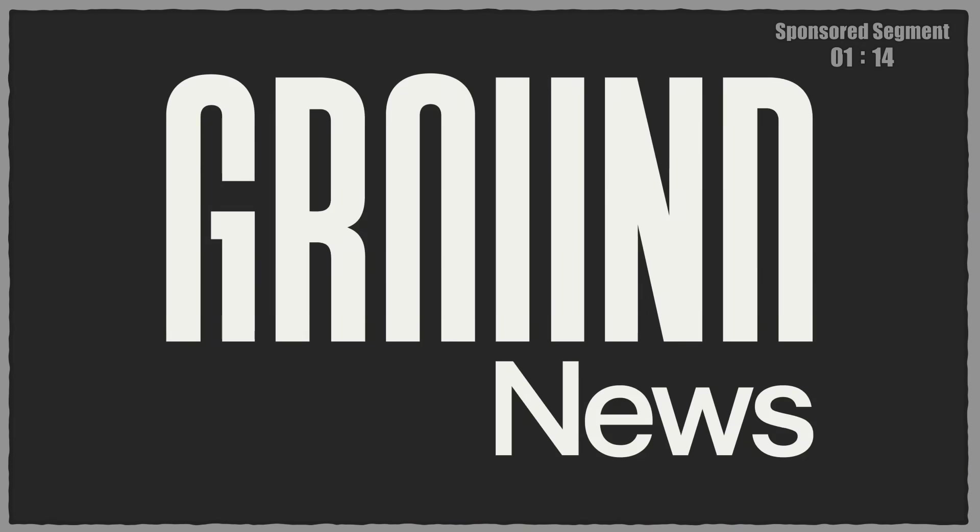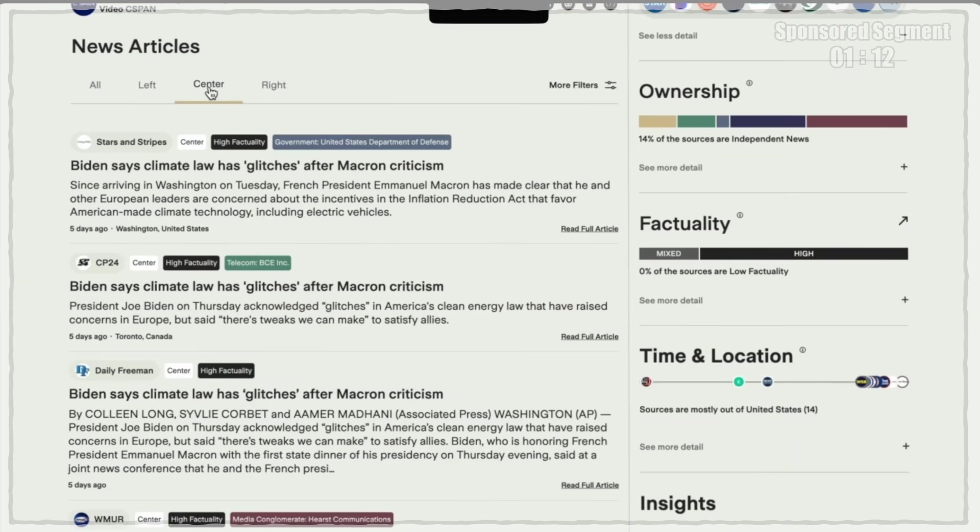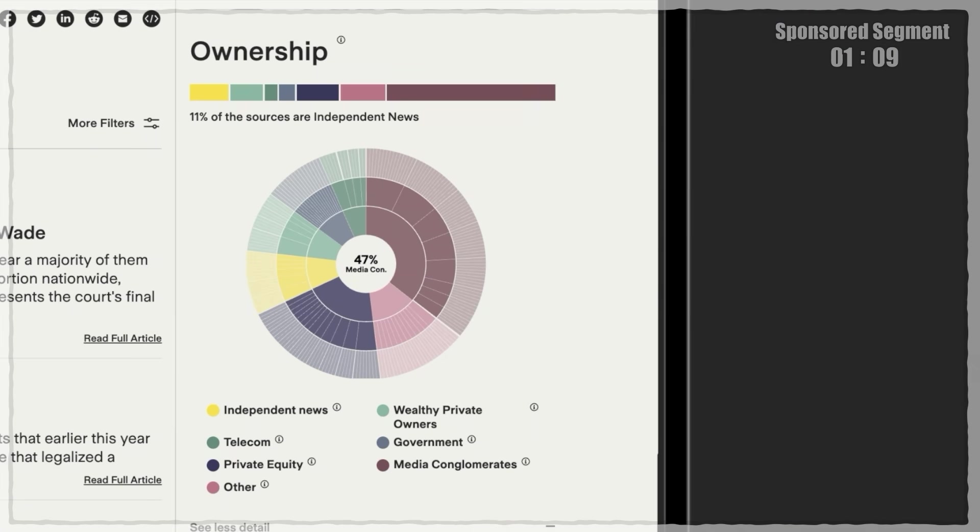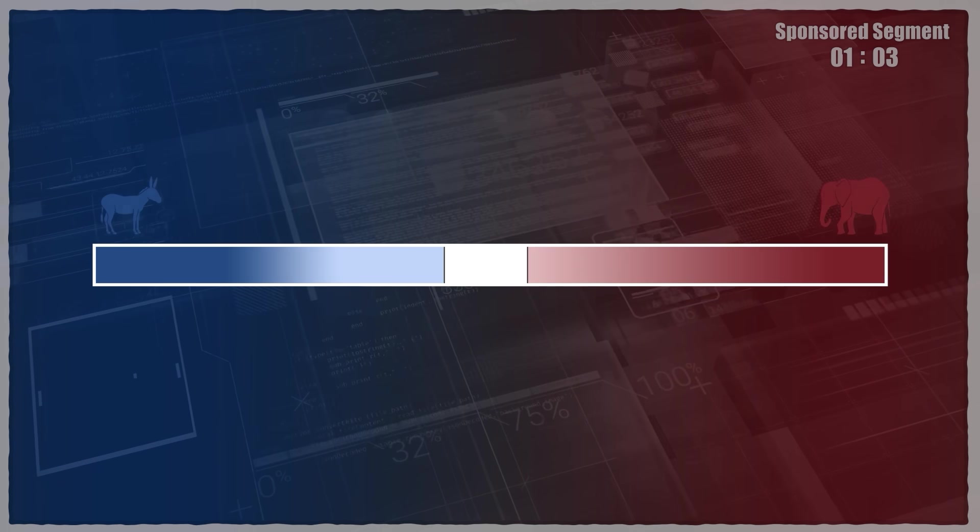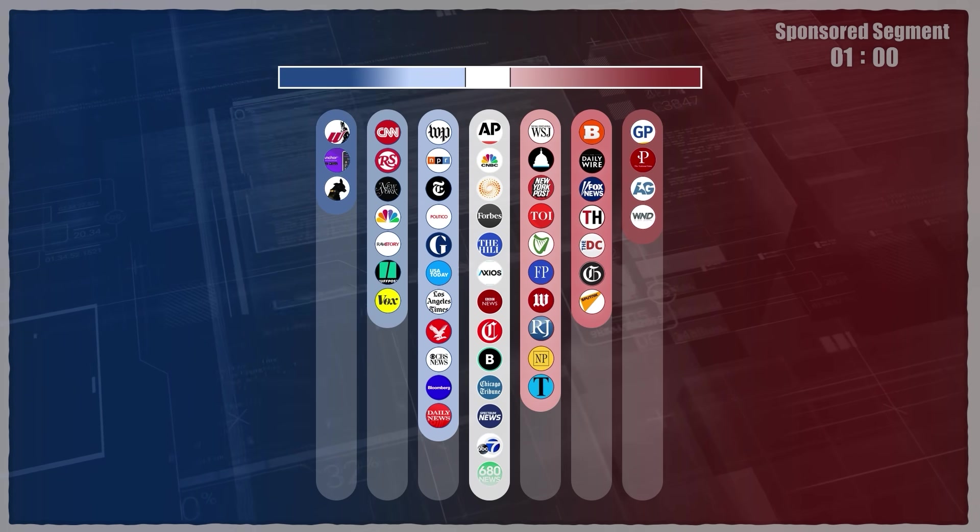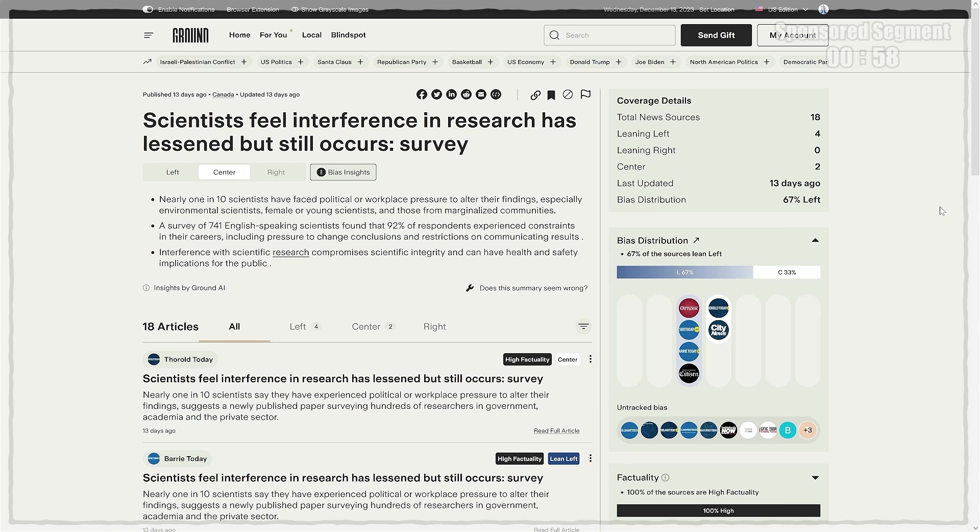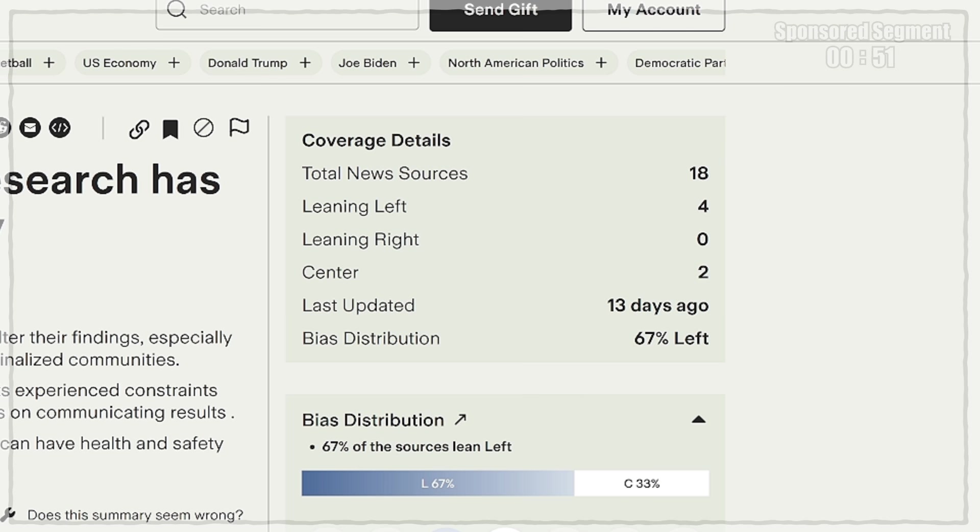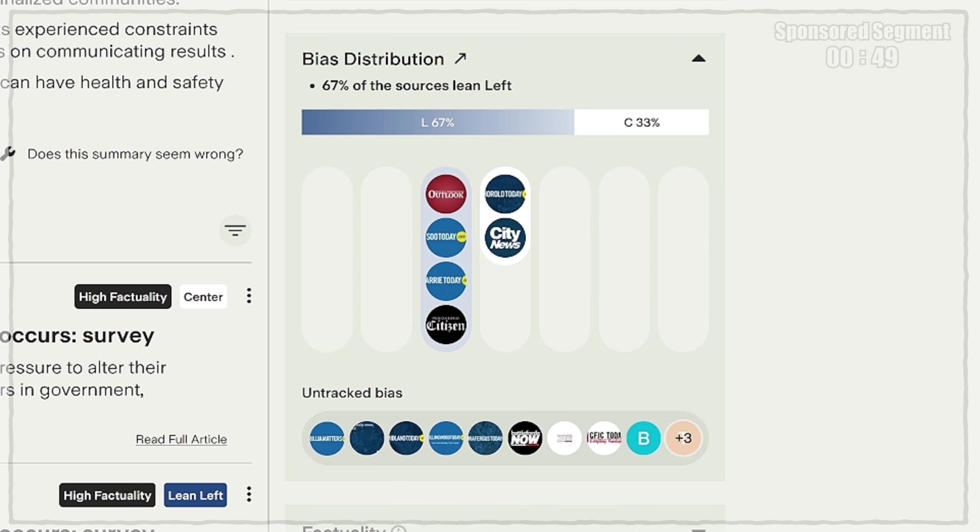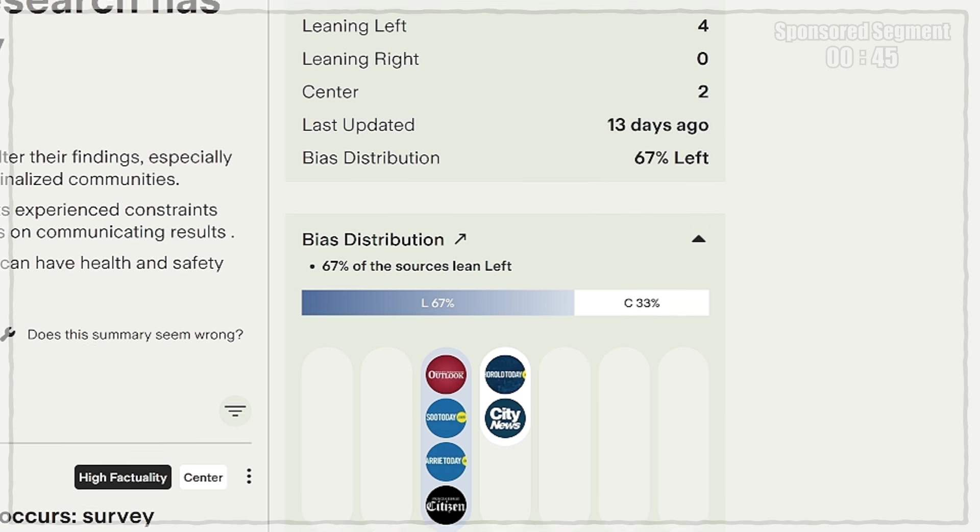Ground News is a great tool for anyone who wants a more data-driven approach to their news. Every story comes with a quick visual breakdown of the political bias, factuality, and ownership of the sources reporting. All backed by ratings from three independent news monitoring organizations. Take the story about interference in scientific research, for example. Right away, you can see that 18 sources have reported on the story. The reports are entirely by center and left-leaning sources, which honestly isn't that surprising for a science story.